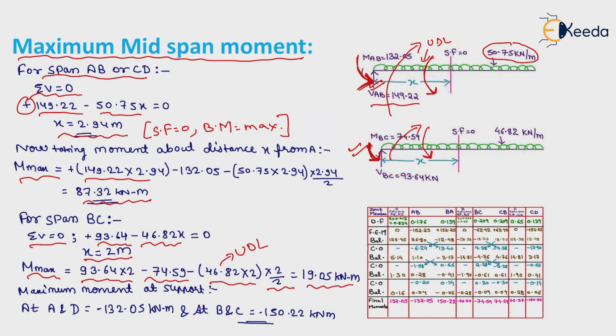Maximum moment at support. Supports are at A, D, B, and C. Maximum negative bending moment at A and D equals −132.05 kNm. At B and C equals −150.22 kNm.